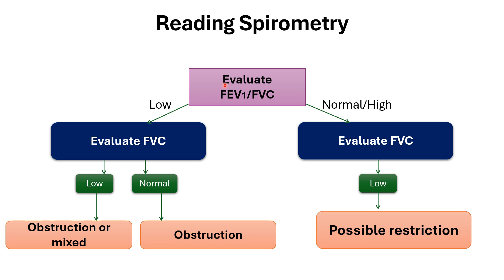When you read the result of the spirometry, you can evaluate the FEV1 to FVC ratio. If the ratio is low, you are dealing mostly with asthma or obstruction. Evaluate the FVC: if the FVC is low, you can have obstruction or mixed; if the FVC is normal, you are dealing with obstruction, like cases of asthma.